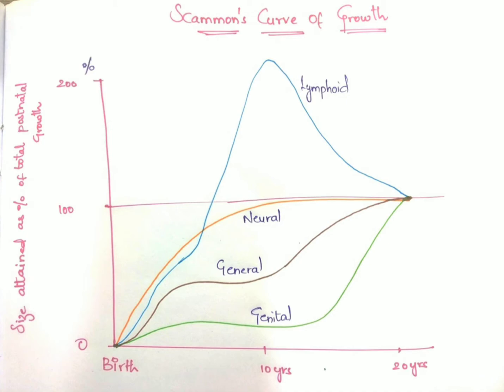The further growth after six to seven years in neural tissue will allow the intake of more knowledge. Total 100 percent of the growth of neural tissue takes place at the age of six to seven years. Afterwards, whatever little growth takes place will help with the intake of further knowledge in a child.